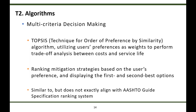The last algorithm implemented in the web tool relates to multi-criteria decision making. To find the best mitigation solution for the selected closure joint, TOPSIS — Technique for Order of Preference by Similarity to Ideal Solution — was implemented. The algorithm utilizes user preference to perform trade-off analysis between cost and service life. The user decides whether to prioritize service life or cost, and the algorithm ranks options accordingly, with the web tool displaying the first and second best options. This is similar to, but does not exactly align with, the AASHTO guide specification ranking system.